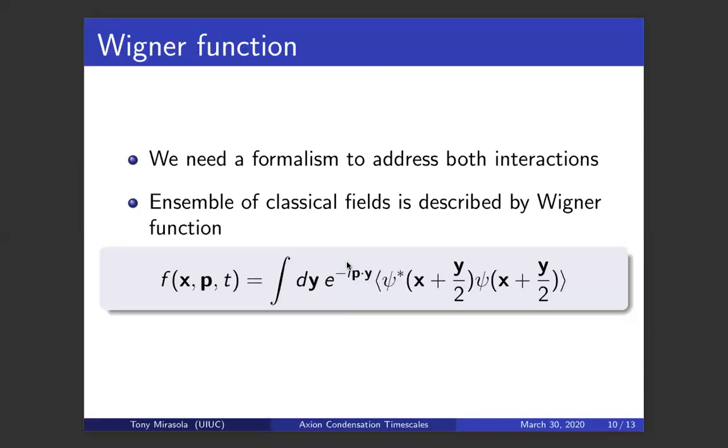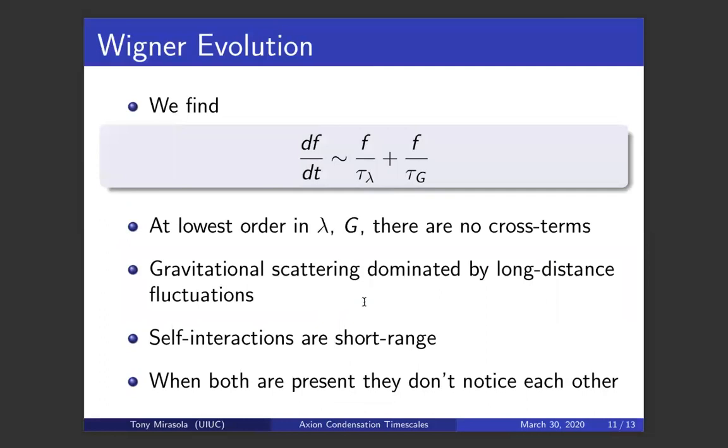When we do that, we get an equation, which I've written in a schematic form here, that splits into two parts. It basically factors into a term that depends only on the self-coupling and a term that depends only on the gravitational constant at lowest order in these two coupling constants. Of course, we're justified in looking at the lowest order because both of these constants are very small. We saw how λ was an extremely small number, and of course, the gravitational constant is famously very weak.